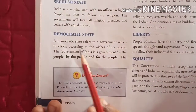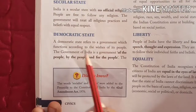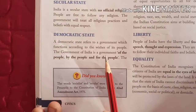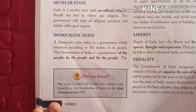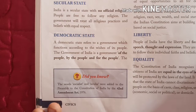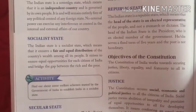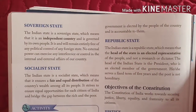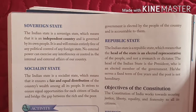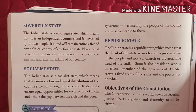A democratic state refers to a government which functions according to the wishes of its people. The government of India is a government of the people, by the people and for the people. The government works according to the wishes of the people of India, and the elected representatives take care of every concern of the citizens.